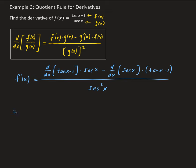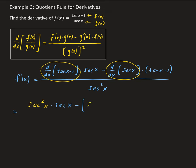Now we can find the derivatives of those portions. The derivative of tangent x minus 1 is secant squared x, since the derivative of minus 1 is just 0. That gets multiplied by secant x. Then the derivative of secant x is secant x times tangent x — I'll put a bracket here to remind myself to distribute the negative — and that gets multiplied by tangent x minus 1. All divided by secant squared x.